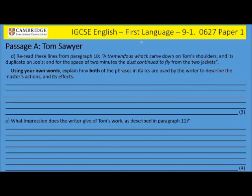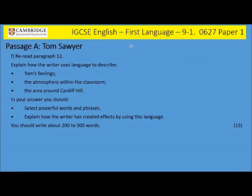Question 1D: Reread these lines from paragraph 10 — 'A tremendous whack came down on Tom's shoulders, and its duplicate on Joe's, and for the space of two minutes the dust continued to fly from the two jackets.' Using your own words, explain how both phrases in italics are used by the writer to describe the master's actions and its effects. Question 1E: What impression does the writer give of Tom's work as described in paragraph 11? Question 1F: Reread paragraph 12. Explain how the writer uses language to describe Tom's feelings, the atmosphere within the classroom, and the area around Cardiff Hill. Select powerful words and phrases and explain how the writer has created effects. You should write about 200 to 300 words.